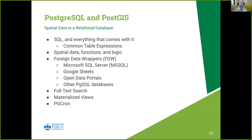A lot of the examples I'll show leverage the foreign data wrapper capabilities — connecting to SQL Server databases, connecting to Google Sheets to read data, but also dumping data back to Google Sheets to drive other charting and reporting. The city and county of Denver and several other open data portals basically operate as tables within our database thanks to foreign data wrappers. The easiest way to connect to the multitude of Postgres databases we have across dev, QA, and production environments also utilizes foreign data wrappers.